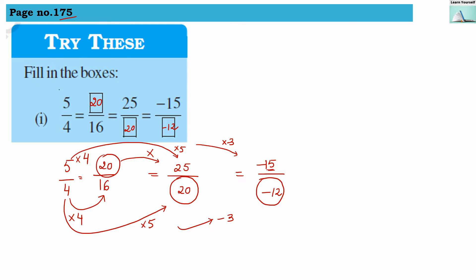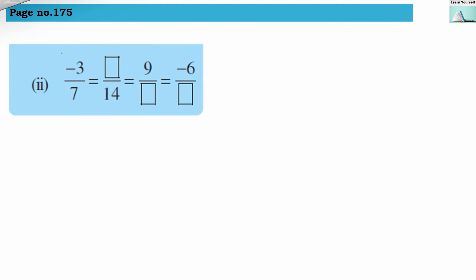Next, minus 3 by 7 is there and we have to guess the numerator, with 14 as the denominator. We must have multiplied by 2 to get 14, so we multiply 2 in the numerator also, giving 6 — and it will be negative because 3 is negative, so the answer is minus 6.